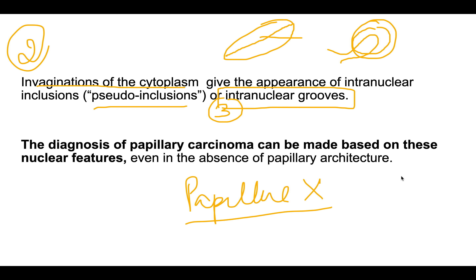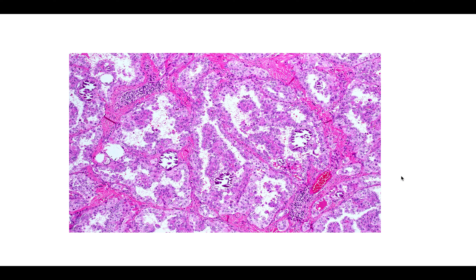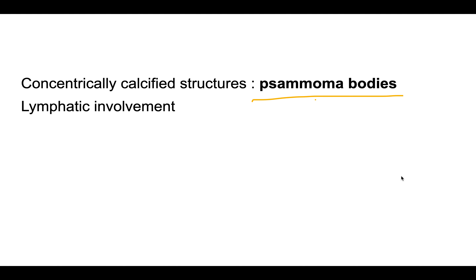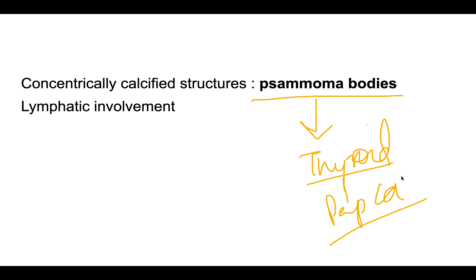Another important feature is the presence of psammoma bodies — laminated calcifications seen in papillary carcinoma, which are an example of dystrophic calcification. Psammoma bodies can be seen in other tumors as well, so they are not highly specific, but in the thyroid gland they are seen only in papillary carcinoma, not in other tumors. Lymphatic involvement leading to cervical lymphadenopathy can also be seen.